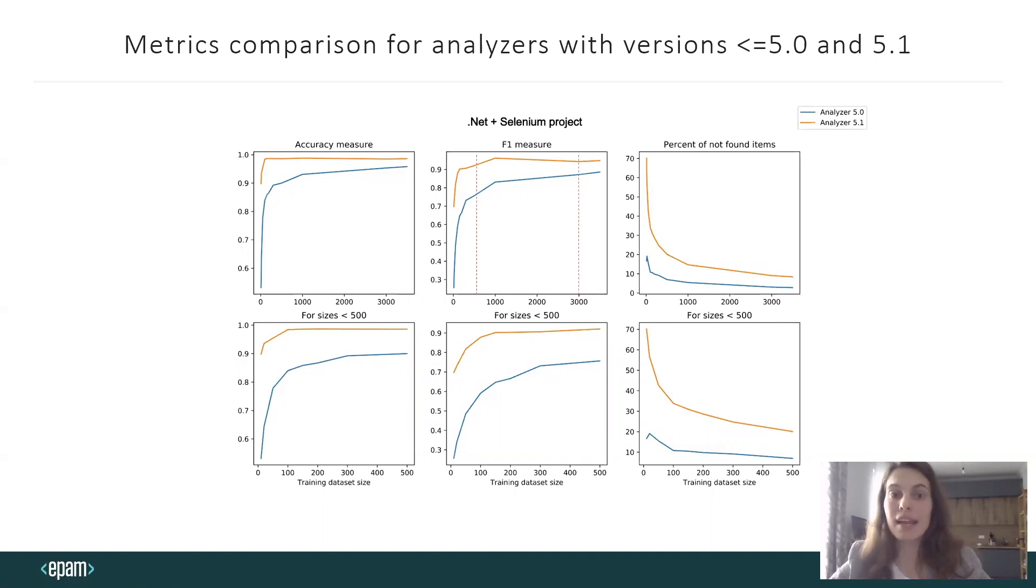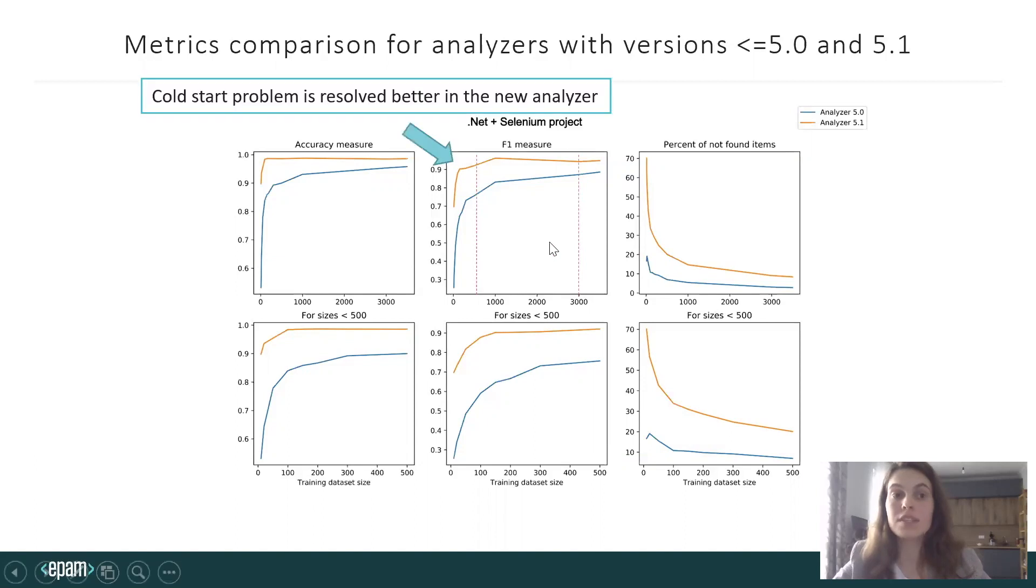On the y-axis you can see the metrics value. On the x-axis the training dataset size. Our metrics are shown in dependence with the training dataset size. If you pay attention to the training dataset size below 500 test items, we have much better results for the new analyzer in comparison with the old one. This proves that the cold start problem is resolved much better in the new analyzer. And the more test items we have in the training set, the better results are.